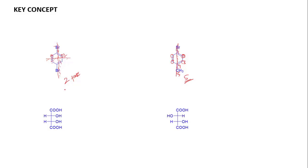Now if we look at meso-tartaric acid, here also we can see it contains a plane of symmetry. Because of this plane of symmetry, carbons on one half are equivalent to corresponding carbons on the other half. So here also we will get only 2 peaks in the 13C NMR spectrum.